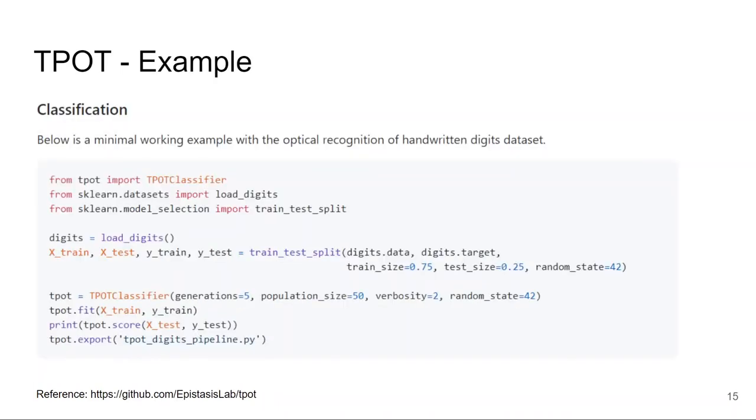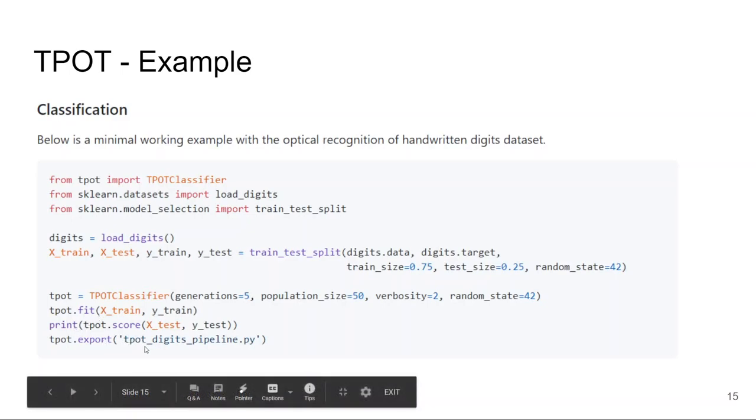Here is the TPOT classification example. Similar to Auto-sklearn library, you just have to change one line of code. You have to replace sklearn estimator with TPOTClassifier. And as TPOT relies on genetic programming, you have to specify number of generations and population size as well. At the end, you can just export the final pipeline into a Python file.